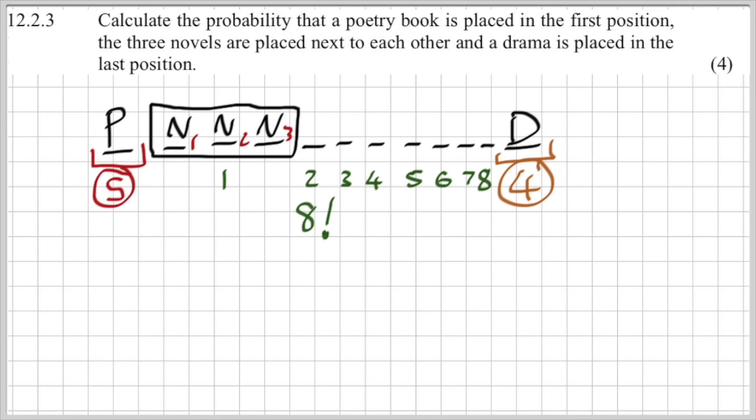The very important thing is now what about inside that box? Don't forget about inside the box. Inside the box there's three objects that can be moved. Let me just backtrack a little bit. Don't forget ladies and gents about this 3 factorial. Where does it come from? I've got three novels and I don't know which order they're going to be in.